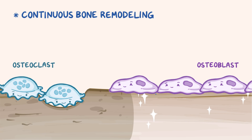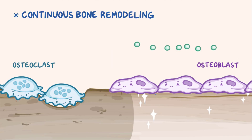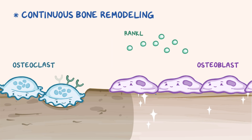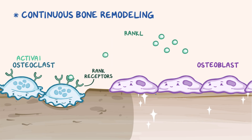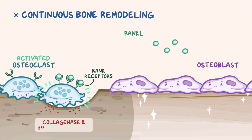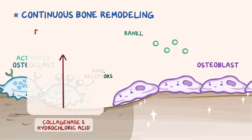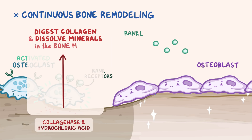At the cellular level, the process begins when osteoblasts release receptor activator of nuclear factor kappa beta ligand, or RANK-L for short, which is a substance that binds to RANK receptors on the surface of an osteoclast. When RANK-L binds to the RANK receptor, it activates the osteoclasts, and they start secreting lysosomal enzymes like collagenase as well as hydrochloric acid. Together, they digest the collagen protein and dissolve the minerals that make up the bone matrix.